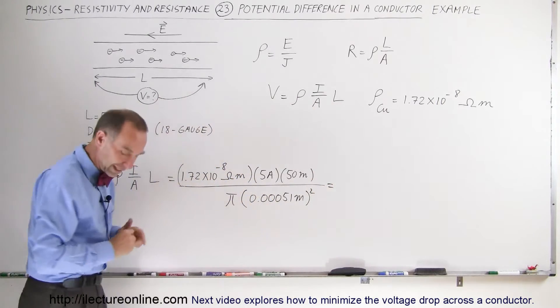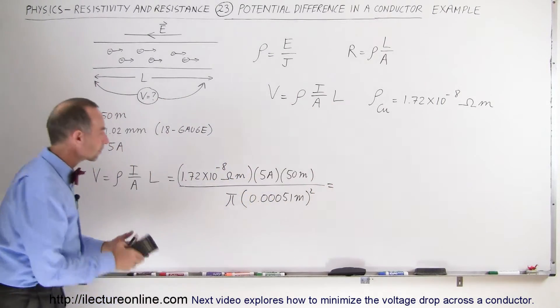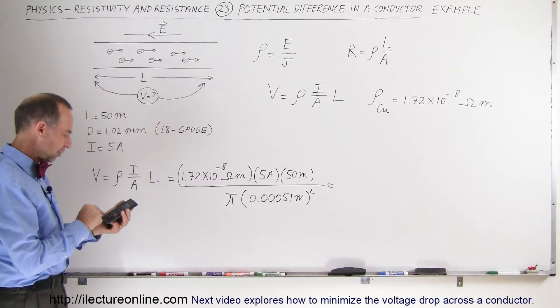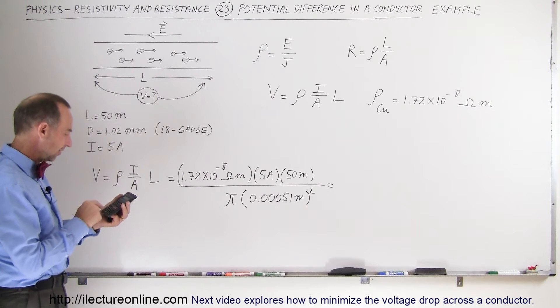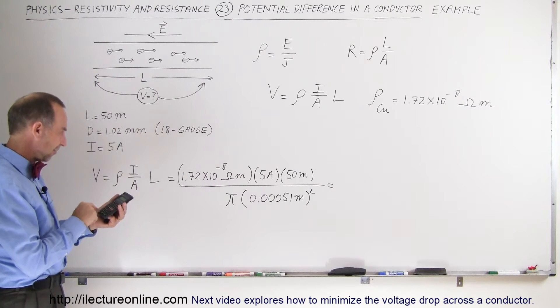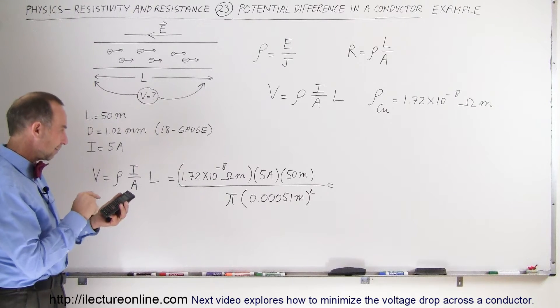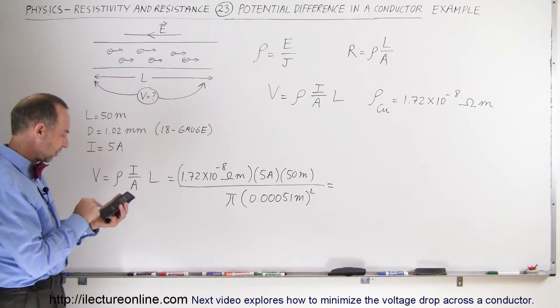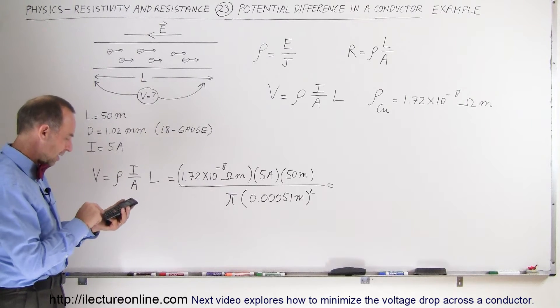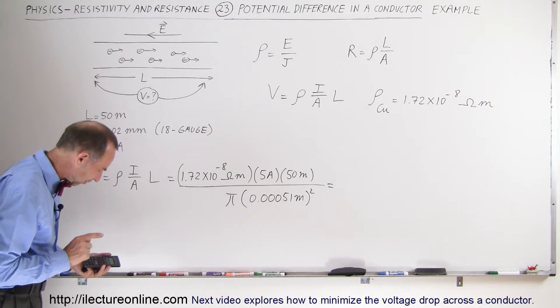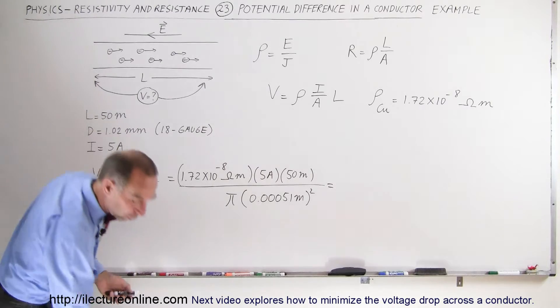And that will give us the potential in volts. So we have 1.72 e to the minus 8 times 5 times 50 divided by pi and divided by 0.00051 squared equals and that gives us 5.26 volts.